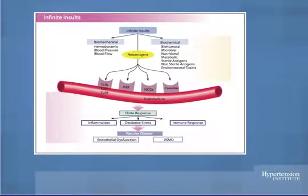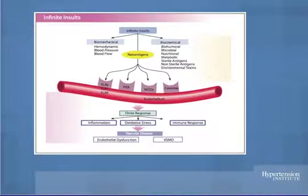Those are the infinite insults. There are two basic approaches. One is biochemical — that's everything you can think of: toxic metals, the top five risk factors, biohumoral, infections, metabolics, sterile antigens, non-sterile antigens, and so forth.